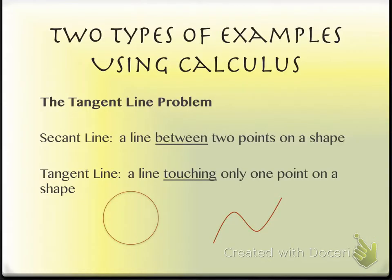I want to do two specific examples — both mentioned earlier — to show how we would approximate calculus concepts using pre-calculus ideas. A secant line is a line between two points on a shape — whatever the shape is, you take two points and connect them. A tangent line is a line that simply touches one point on the shape.